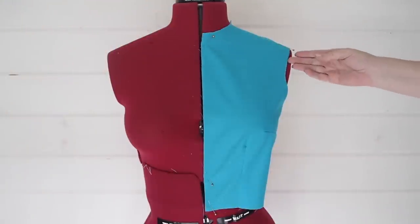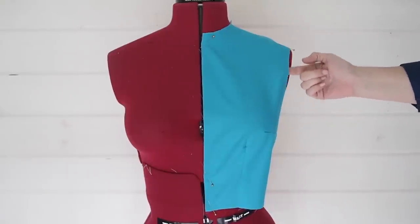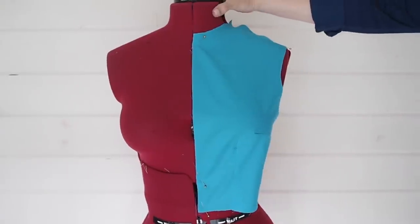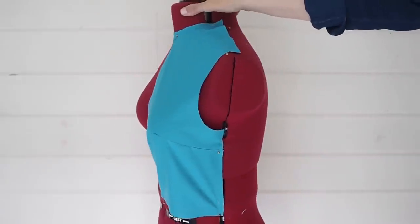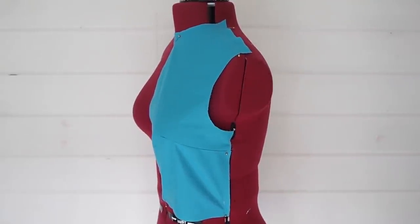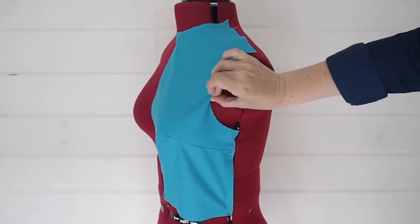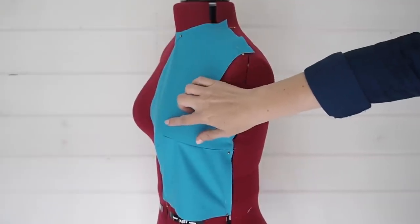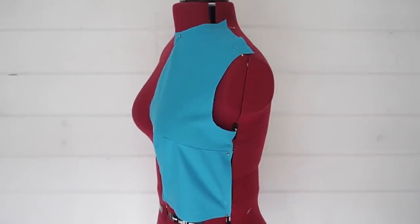So back to the mannequin for technique number two. For this one, I'm going to show how I reduce gape. The woven block you've seen at the start is designed to have a sleeve inset into it. And in order for the bodice and sleeve to be nice and comfortable on, there's a little bit more room added into the armhole. So if I wanted to sew this pattern up as a sleeveless design, I would have a little bit of gape there.